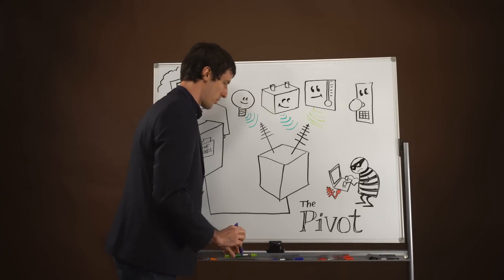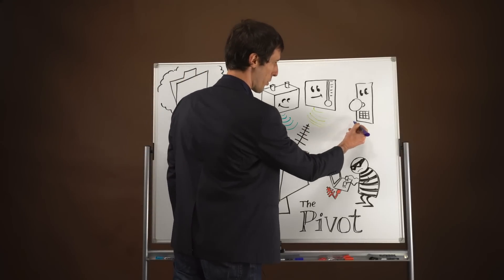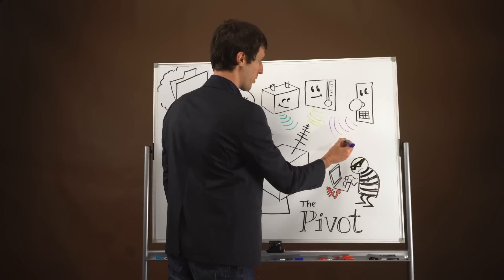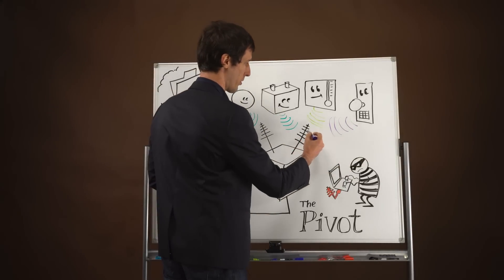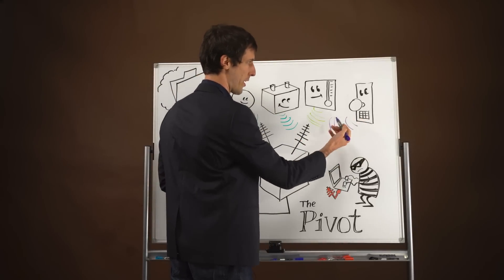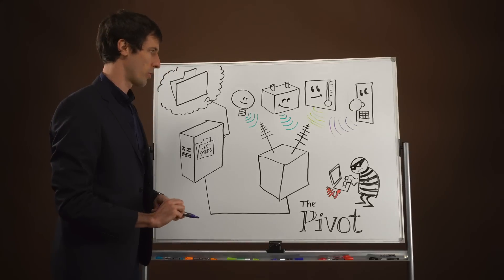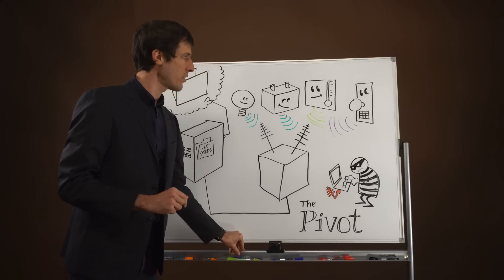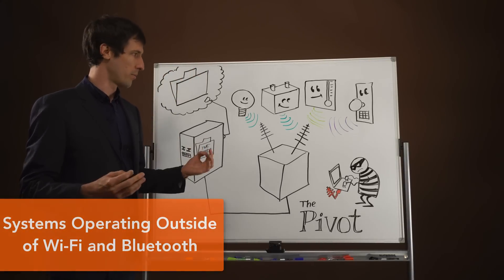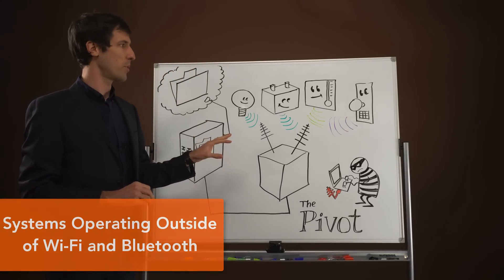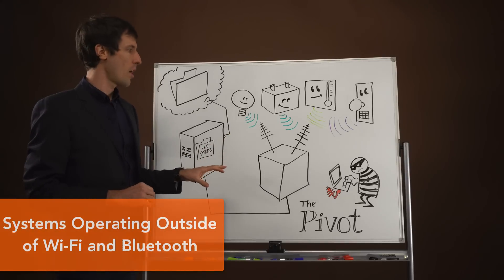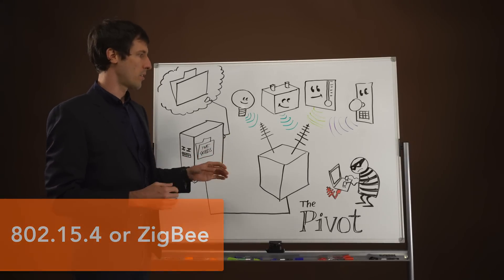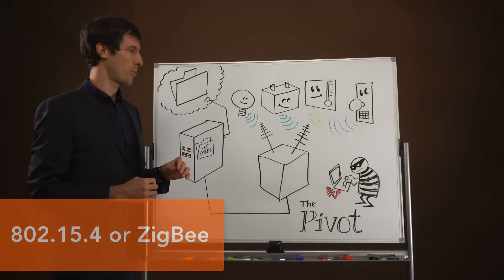You might also have physical access systems that employ radio protocols to report when doors are opened and allow the hub to control locks. These systems tend to use different protocols than you commonly hear about - not Wi-Fi or Bluetooth. One common example is 802.15.4 or Zigbee and the various profiles built on top of that.